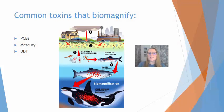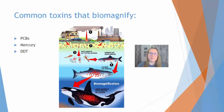The toxins that are going to biomagnify or bioaccumulate are often going to be your persistent organic pollutants, or POPs. Some examples include PCBs and DDT, but heavy metals are also going to bioaccumulate and biomagnify.